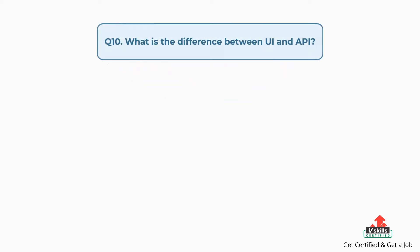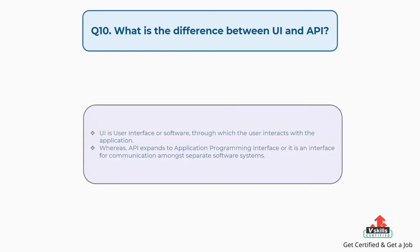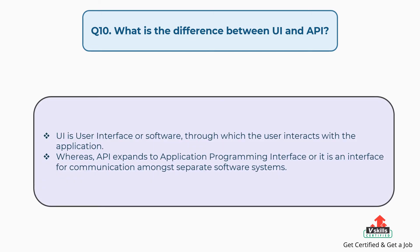Question number ten: What is the difference between UI and API? UI is user interface or software through which the user interacts with the application. Whereas API expands to application programming interface, or it is an interface for communication amongst separate software systems.